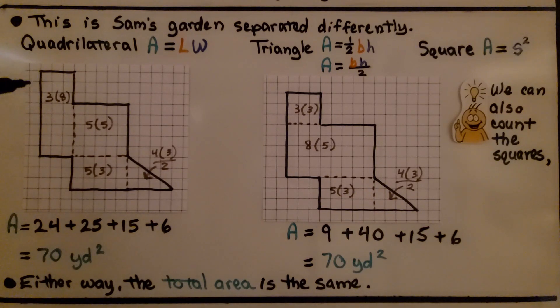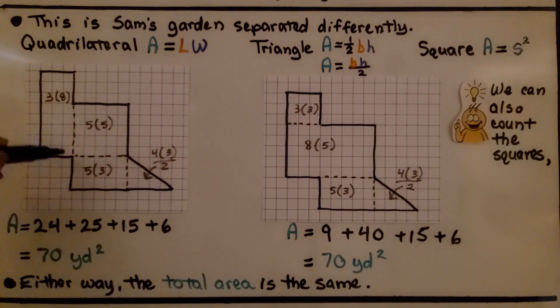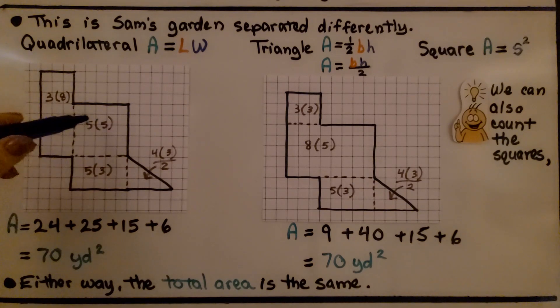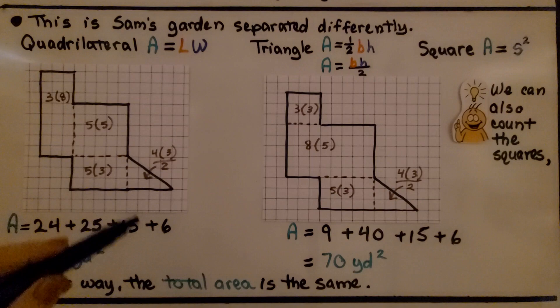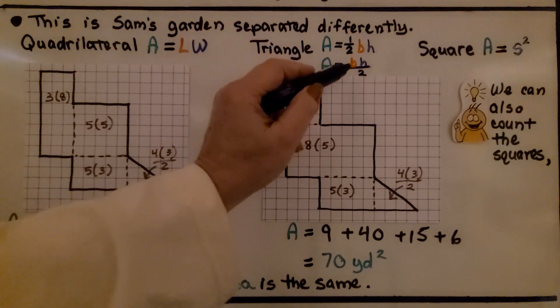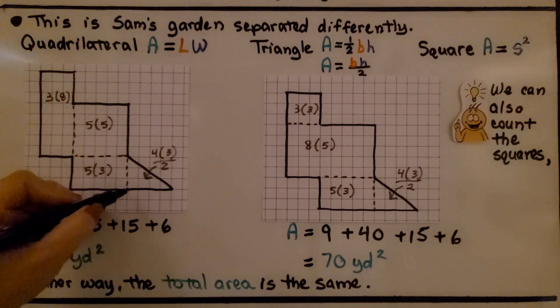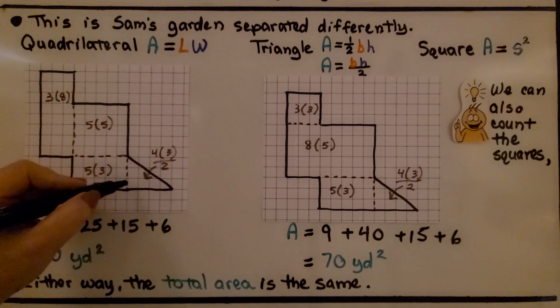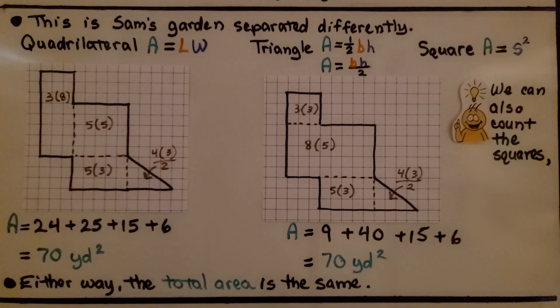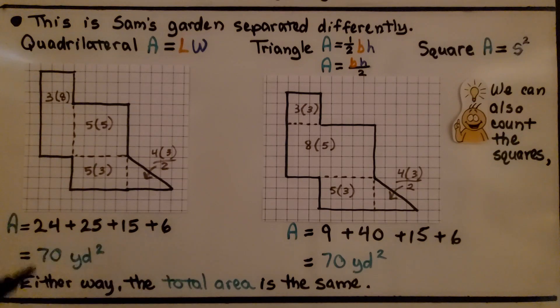For this one, we're going to do, for the square, side times side. It's got a side of 5 and a side of 5, so we do 5 times 5, we get 25. For this one, we do length times width, we get 3 times 8. For this one, we get 5 times 3. And for the triangle, we can do half times the base times the height, or it's the same thing as the base times the height divided by 2. So we've got a base of 4 and a height of 3. That would be 12. When we divide it by 2, we get a 6. We add all the separated pieces, all the areas together, we get 70 yards squared.